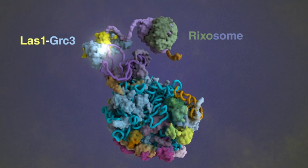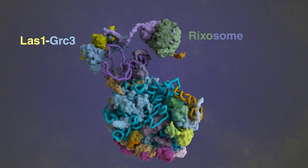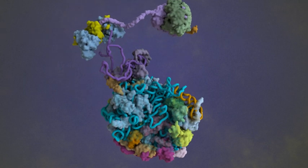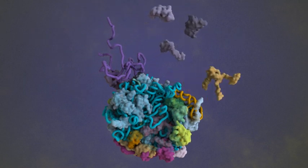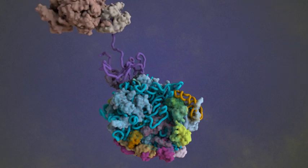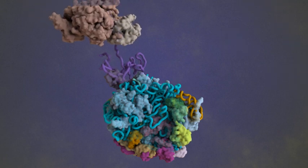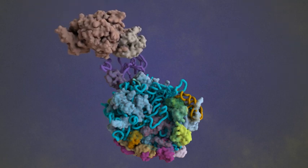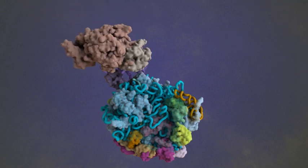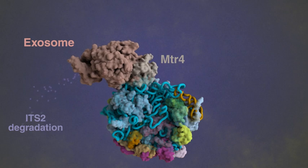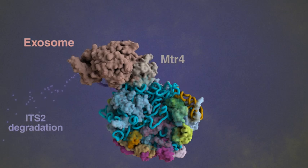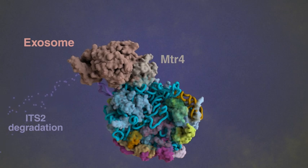Pre-60S nuclear factors can now bind to the newly vacated sites in the particle. LAS1-GRC3, an endonuclease, cuts at the C2 site. This allows for ITS-2 degradation by exonucleases, including the exosome. The exosome and its cofactor MTR-4 are recruited by the pre-60S factor NOP-53.